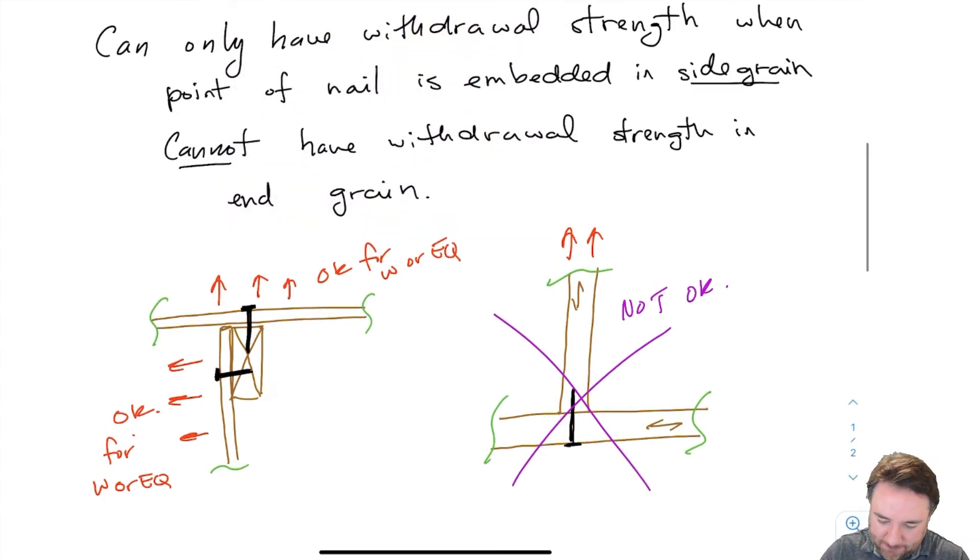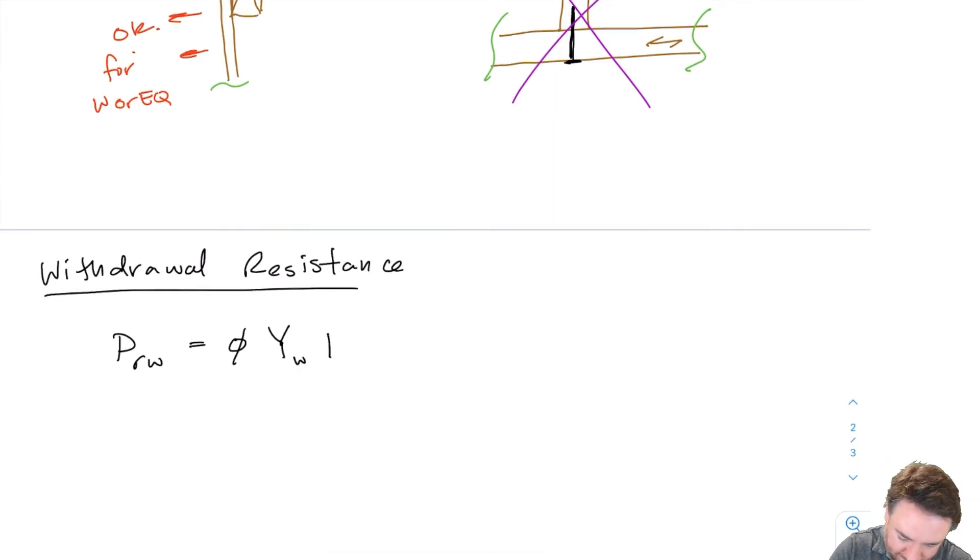So in this equation this is load, PR resistance for withdrawal W, PRW. We have a phi factor so material reduction factor. We have a YW which is basically a modified withdrawal resistance per millimeter of penetration and LP which is the length of penetration. Then NF is the number of fasteners that we have in the connection resisting the withdrawal. JA and JB are for toenailing and clinching which are similar to what we looked at when we looked at lateral resistance of nailed connections but the values are a bit different so we're going to look at those.